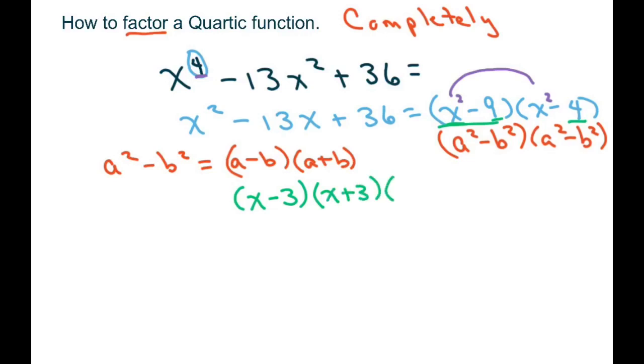And similarly, you'll do this because 4 is a perfect square. The square root of 4 is 2. So that's going to be x minus 2 times x plus 2.